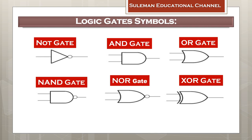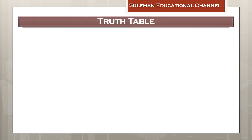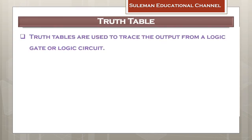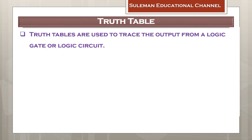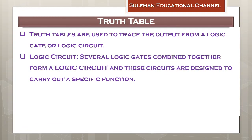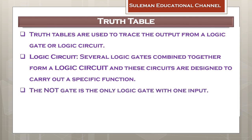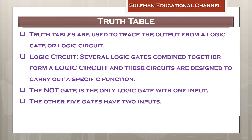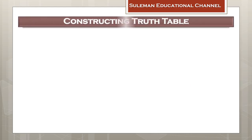Now after discussing the types of logic gates, we will discuss what a truth table is. The purpose of using a truth table is to trace what the output will be if a certain input is given. A truth table is designed for logic gates and logic circuits. A logic circuit is a combination of two or more logic gates. Keep in mind that the NOT gate is the only logic gate that takes one input, whereas the other five gates take two inputs.